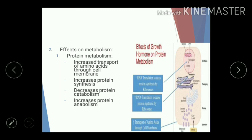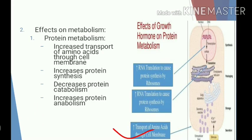Growth hormone has an anabolic effect on protein metabolism. It increases the rate of amino acid transport and increases protein synthesis by enhancing RNA translation and transcription. It also decreases catabolism of protein, giving it a protein anabolic action. The overall effect of growth hormone on protein metabolism is a positive nitrogen balance, resulting in an increase in body weight. It also decreases degradation of amino acids for energy purposes.